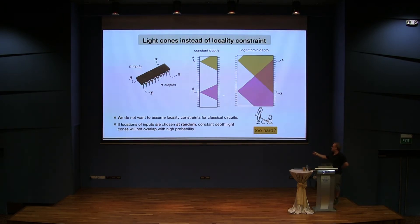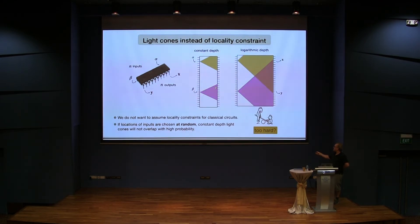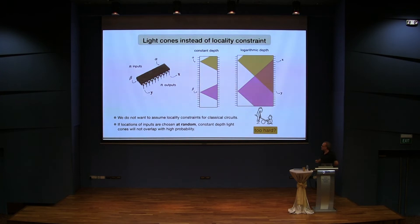Because it's only constant depth here, and the number of inputs and outputs scales with N, if these light cones don't overlap, then we have introduced in some way a communication constraint on the problem. And it's now hard for a classical computer to deal with this. Now it might also be too hard for a quantum device, because now we have these inputs at random locations of the circuit, and how do we make sure that these random locations are entangled so that we can actually play the game?